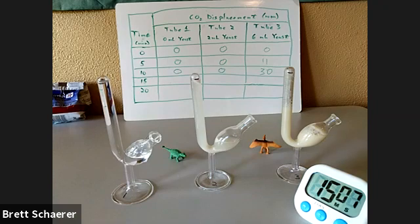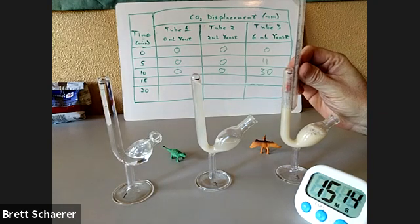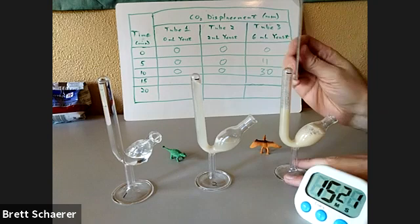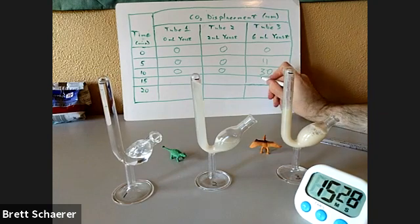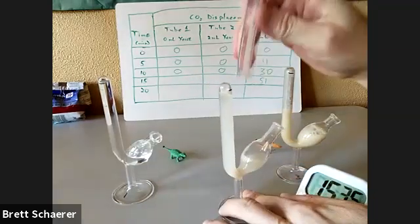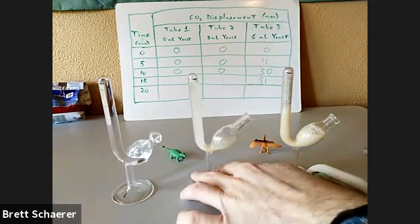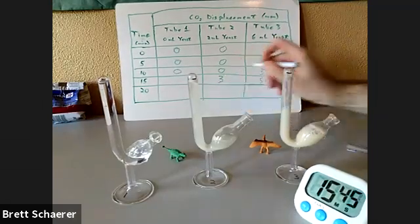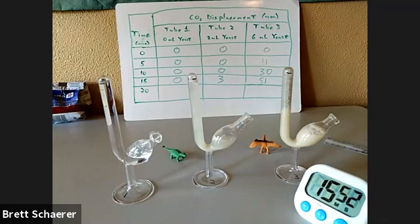We are at 15 minutes now, so we'll do another measurement. That looks like 51 millimeters for tube three. Looks like tube two is finally getting going — looks like about three millimeters. And tube one is still at zero. I'll pause this again and take one more reading.